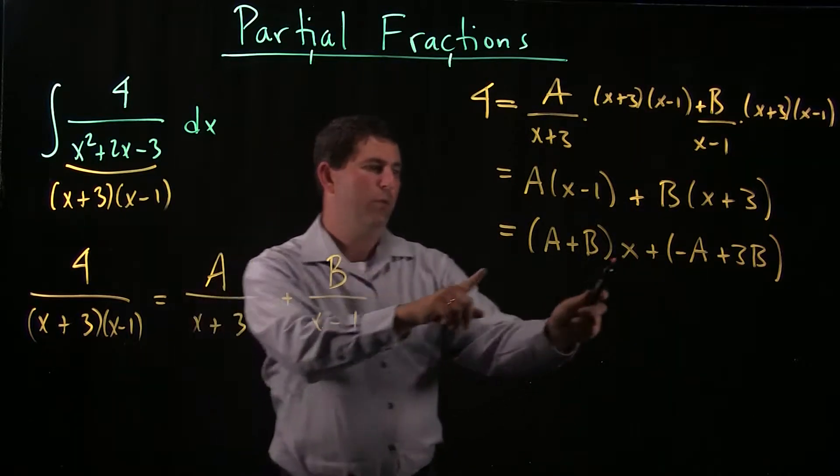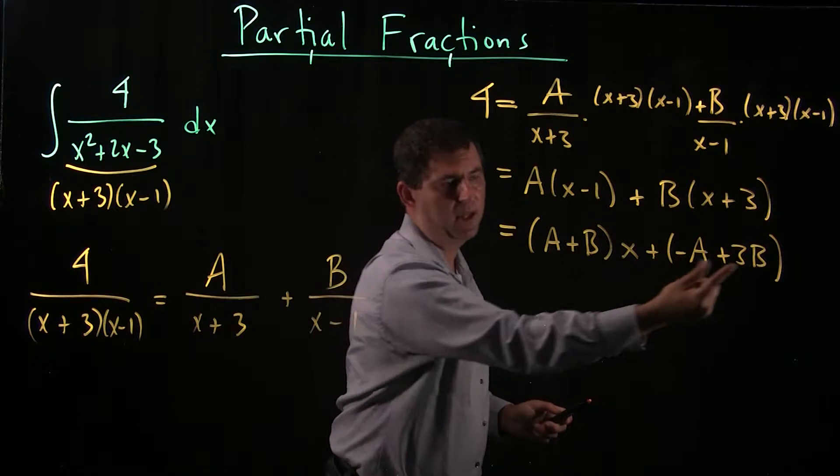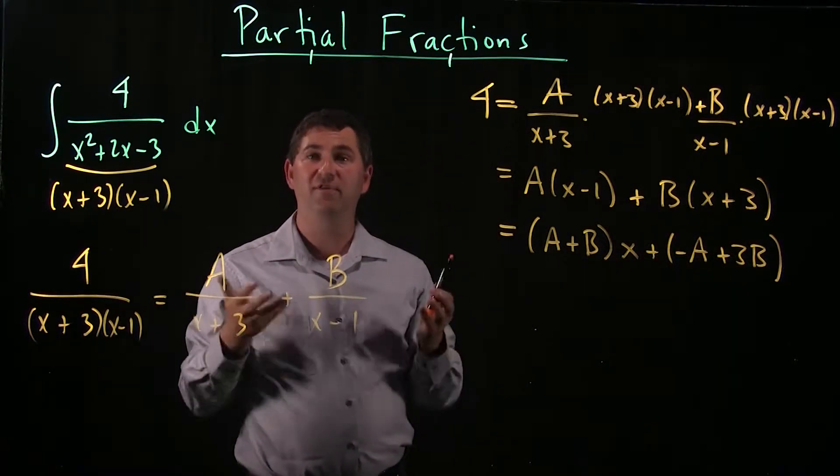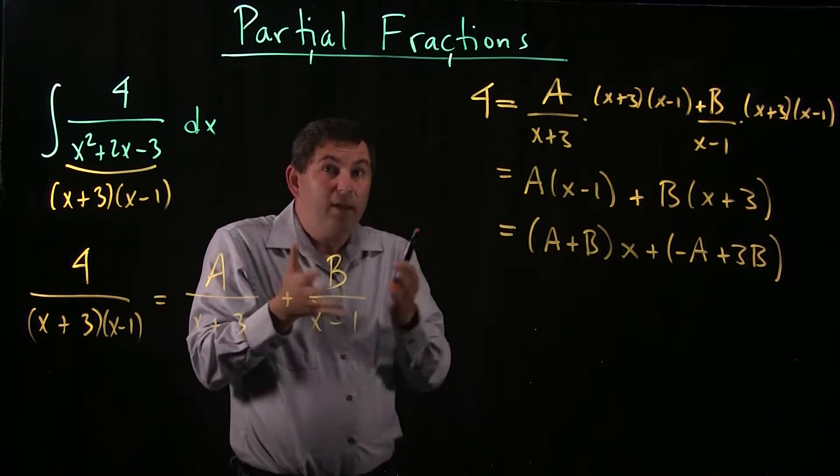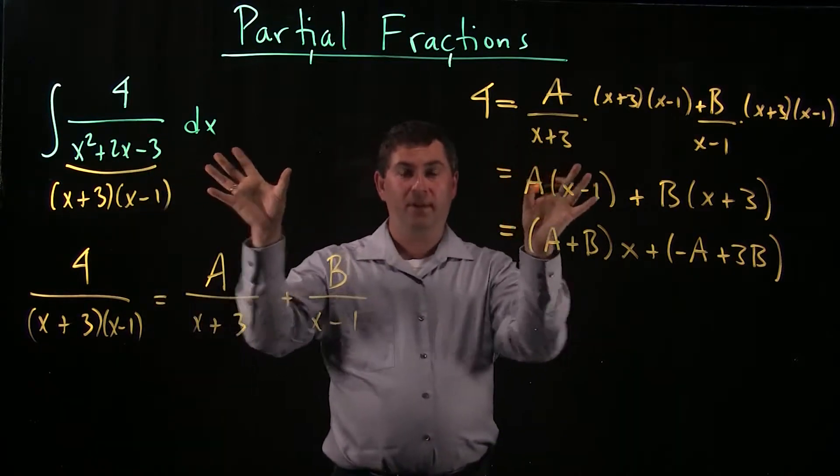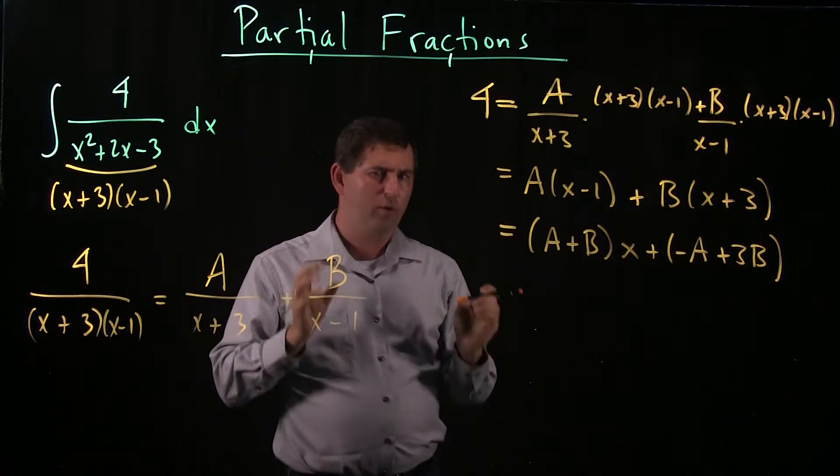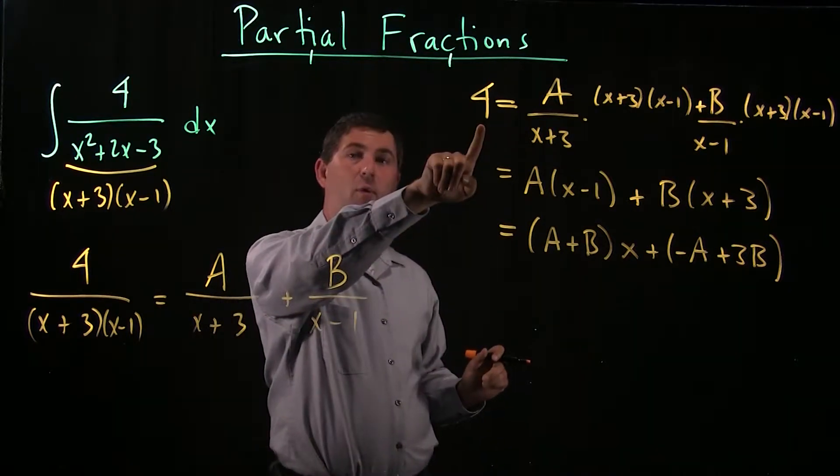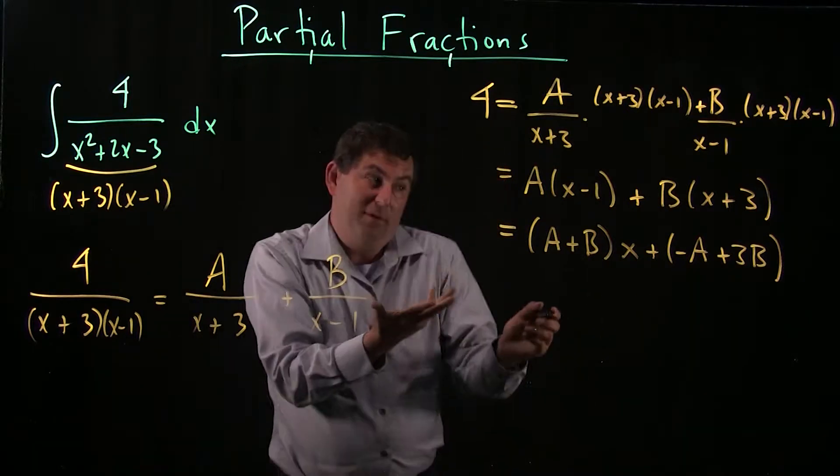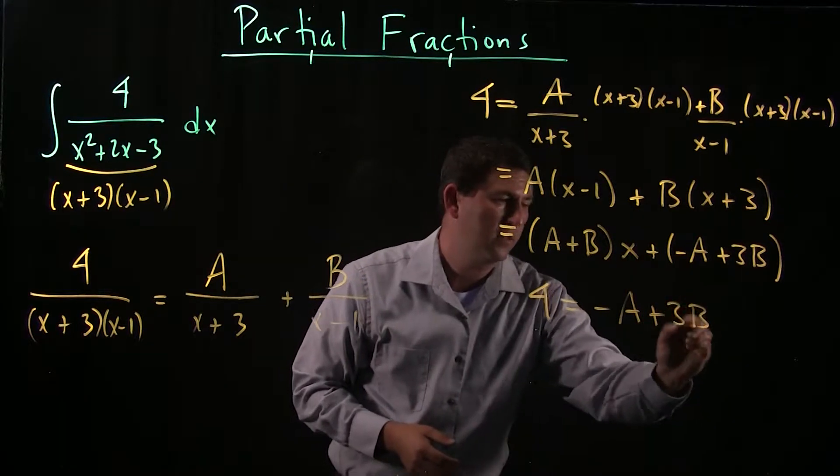Okay, so now on the right side, I have a polynomial a plus b times x plus some number. On the left side, I have a polynomial. It's a very simple one. It's just the polynomial 4, but it's polynomial nonetheless. And there's a rule about polynomials. If I have two of them, and they're equal to each other, their coefficients have to match. So what do I mean by the coefficients? I mean, the constant term here is 4. So the constant term here has to be 4. Let's write that down. 4 equals negative a plus 3b.